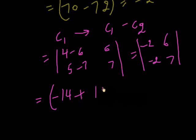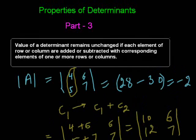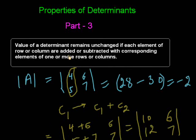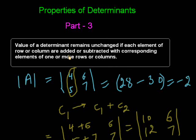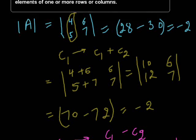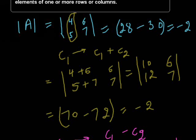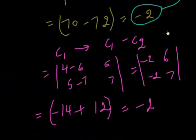And again, the value is minus 2. So our property of determinant is proved: the value of determinant remains unchanged. In the first case, it's the same as its value.